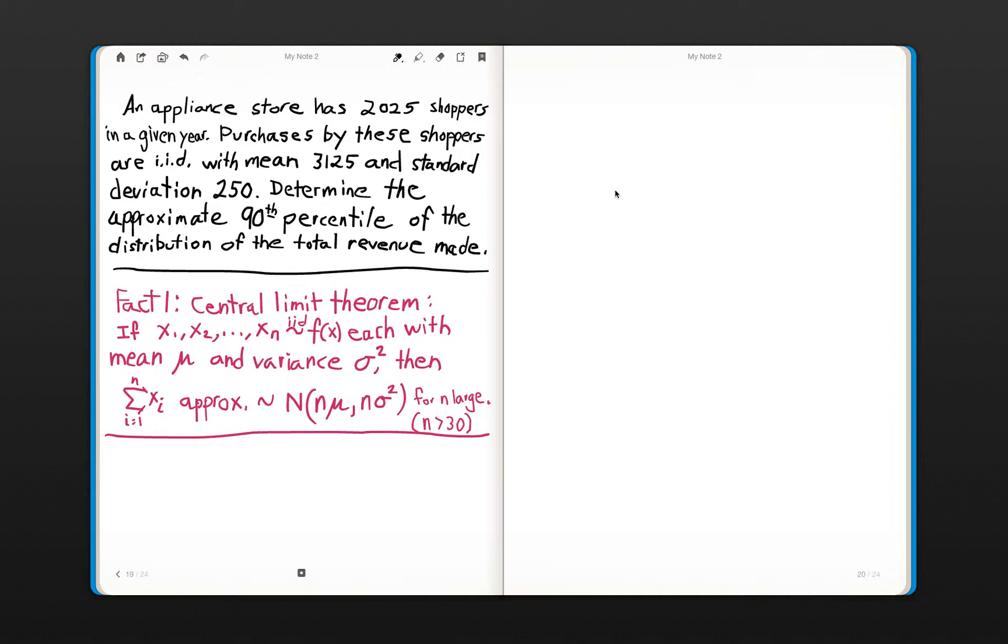Purchases by these shoppers are IID, that stands for independent and identically distributed with mean $3,125 and standard deviation of $250. We'd like to determine the approximate 90th percentile of the distribution of the total revenue made for that given year. Before we can solve this problem, we need to know and understand the central limit theorem.